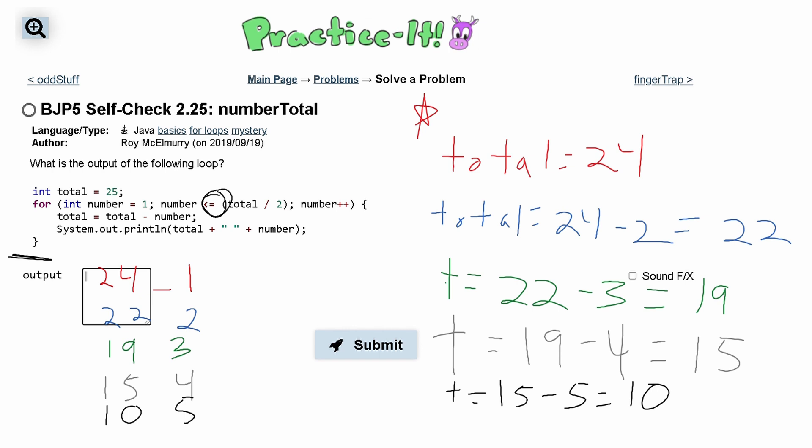And there's no more code so this is going to be our answer. 24 space 1 and on the next line 22 space 2. The next line 19 space 3. Next line 15 space 4. The next line 10 space 5.